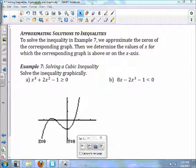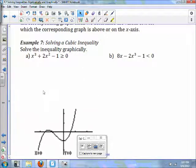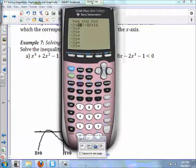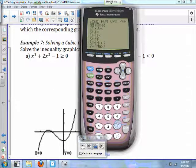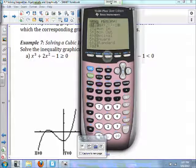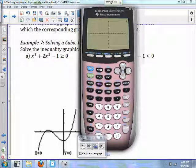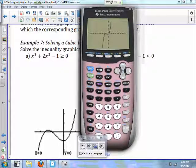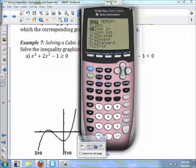To solve the inequality in example 7, we approximate the zeros with the corresponding graph. Then we determine the values of x for which your corresponding graph is above or on the x-axis. So if you look at example 7, solving inequality graphically. What we're going to do, we're going to put this equation into our calculator. So x cubed plus 2x squared minus 1. Put that into your calculator. As you can see, it's kind of funny right near the origin there, so I'm going to zoom in one time.